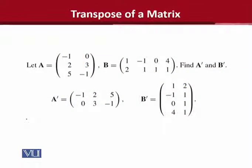As you can see, A is a certain matrix and B is also a matrix. They have their own orders. If you try to highlight them, it will be 3 into 2 — there are 3 rows and 2 columns. And if you talk about B, it has 2 rows and 4 columns.